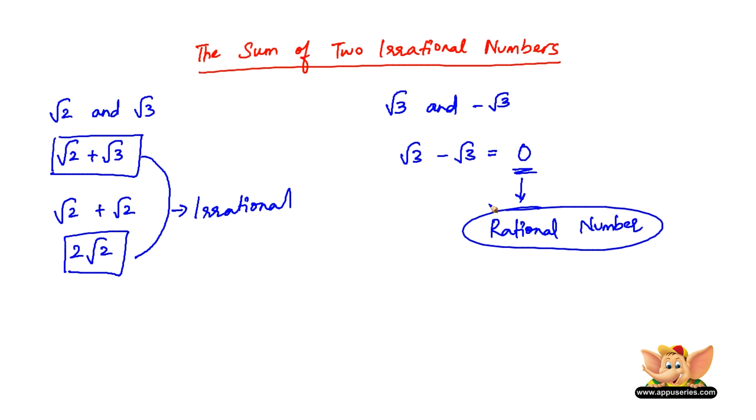So therefore an important conclusion to be made from this is the sum of two irrational numbers need not always be irrational. Or in other words, the sum of two irrational numbers can be rational or irrational.